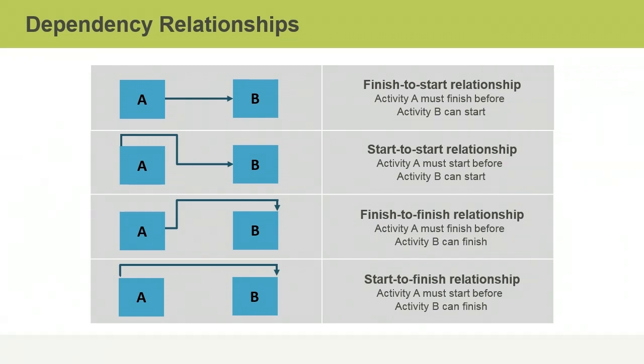In a finish-to-start relationship, one activity has to end before another can start. In a start-to-start relationship, one activity must start before another can begin. In a start-to-start relationship, an arrow goes from the top left corner of activity A to the left side of activity B.